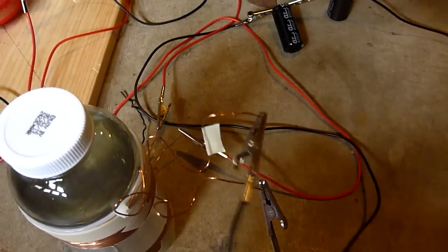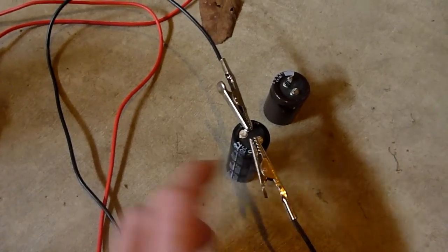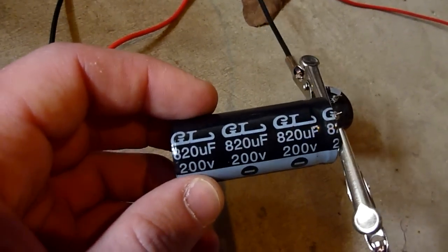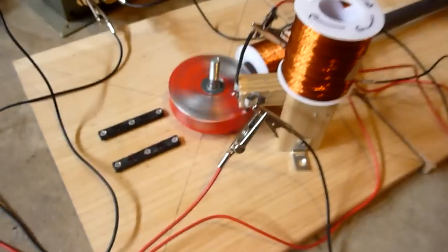On the other side I have one side hooked up to a large capacitor. The other wire is hooked up to the negative terminal of the capacitor. This capacitor is 200 volts, 820 microfarads. Look how fast this thing is going now.